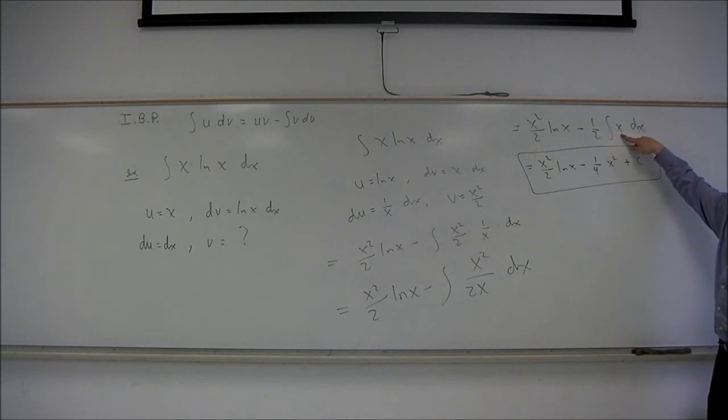The integral of x would be x squared over 2, and then the 2 in the denominator, we'll multiply that 2 in the denominator, and we'll get a 4 in the denominator. So x squared over 2 log x, minus one fourth x squared plus c.